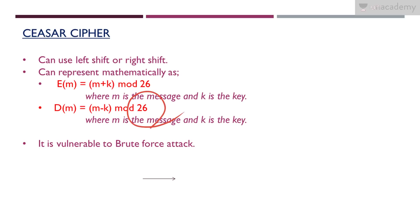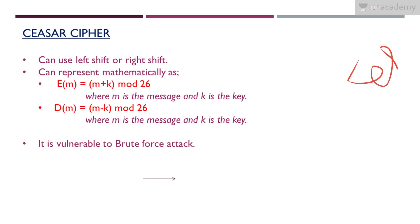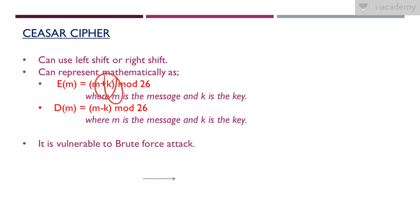The Caesar cipher is vulnerable to brute force attack and its security is very low — it is one of the weakest ciphers. A brute force attack means trying every possible key on the cipher text until an intelligible translation is found. Because the key can only have a limited number of values (at most 25 meaningful shifts), attackers can easily decrypt the message.